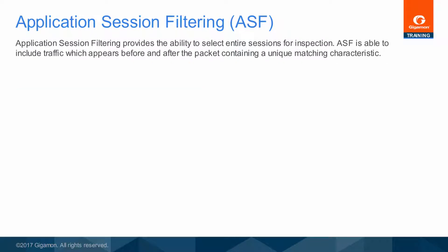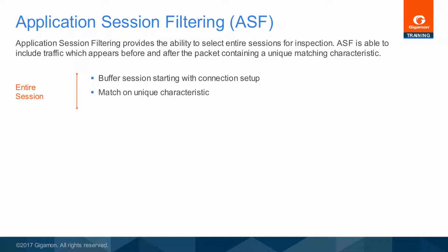As its name suggests, the GigaSmart Application Session Filtering, ASF, feature provides a means to match on a unique characteristic within a packet stream, and then send packets from the same session which appear before and after the packet containing that unique matching characteristic. Sometimes described as SYN to FIN, ASF is able to buffer the initial connection setup packets while waiting to match on a specific unique characteristic. When a match takes place, the buffered packets are forwarded, and then any additional packets for the same session can be forwarded until the session expires.